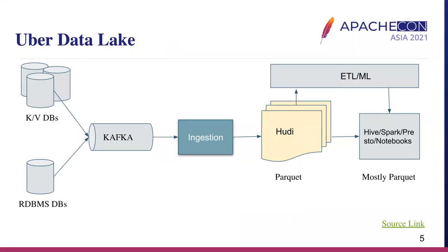In the Uber Data Lake, we ingest data from upstream using ingestion pipelines and ETL and machine learning jobs to transform the data. The upstream has transactional data with schemas. We ingest data through Kafka and use Hudi as a table format. Hudi was born at Uber and is one of the three table formats along with Iceberg and Delta Lake. Hudi supports incremental ingesting by upsert. The file format supported by Hudi is mainly Parquet. For data analytics and machine learning, the output format could be Parquet or ORC — mainly Parquet. We have a small portion of files still in ORC, but we are converting them to Parquet.